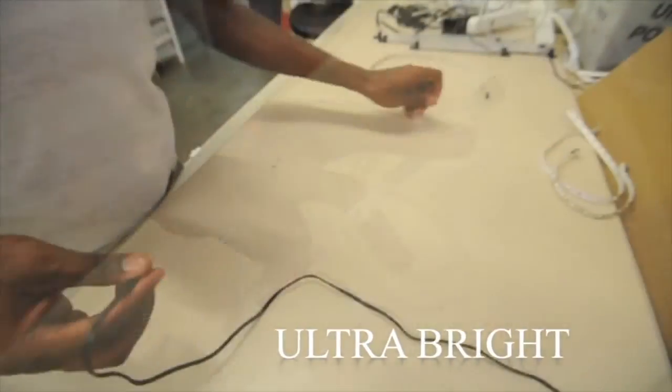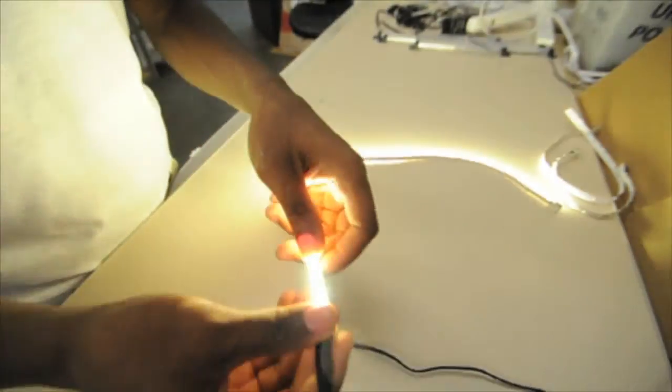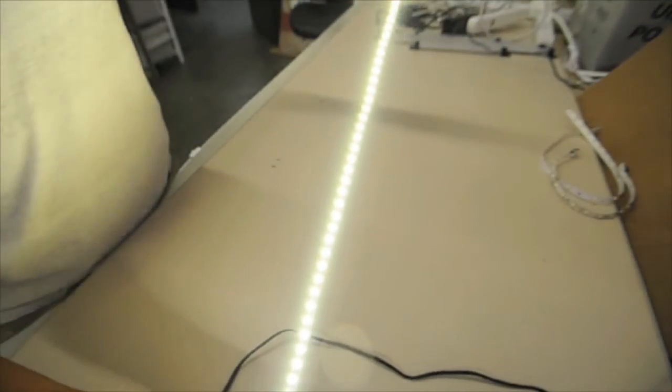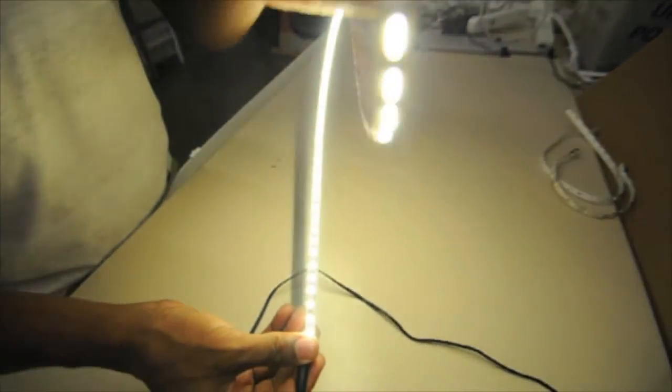Our brightest flexible strip is the Ultra Bright. It's roughly 30 LEDs per foot and provides a substantial amount of task lighting. Ultra Bright is ideal for under cabinet lighting.